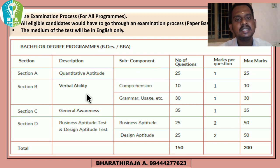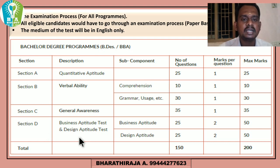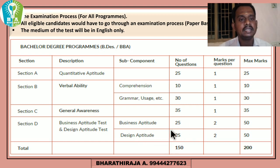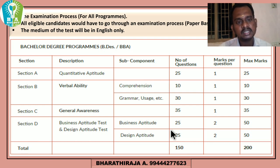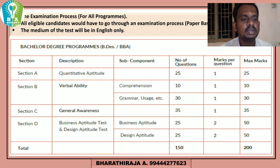Section C is General Awareness with 35 questions. Section D covers Business Aptitude and Design Aptitude, which are course-related. Each question carries 2 marks. The total is 50 plus 50 — 100 marks total, with a cutoff calculated out of 200.